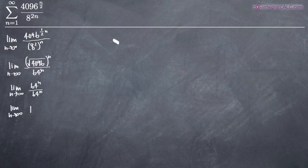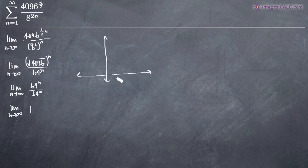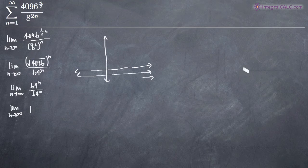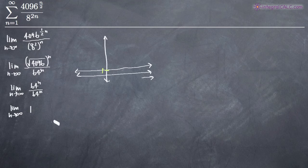We don't even have to evaluate at infinity because there's no variable left in our function — we've simplified it to 1. This tells us the graph of our function is just y equals 1, a horizontal line. As x approaches infinity, the graph is always going to approach 1. So the limit as n approaches infinity of the function is equal to 1.